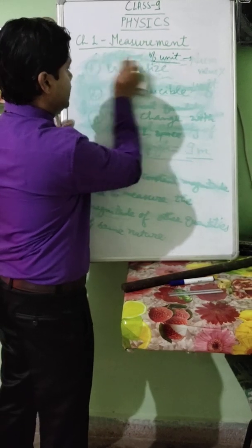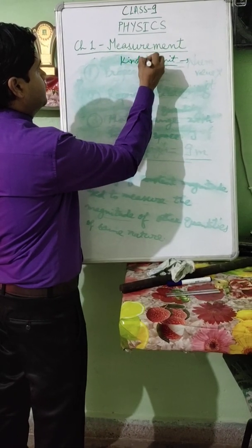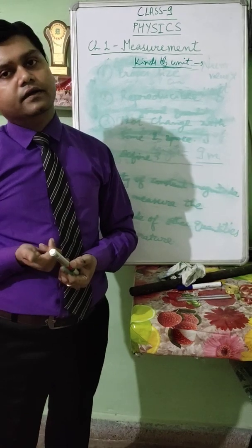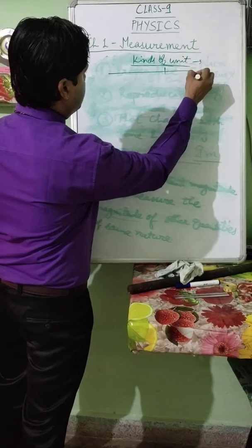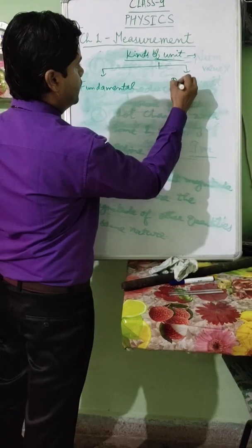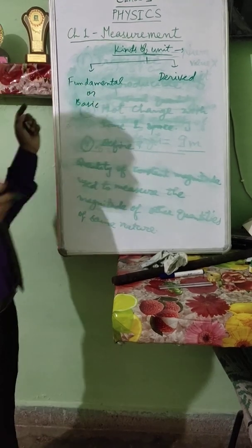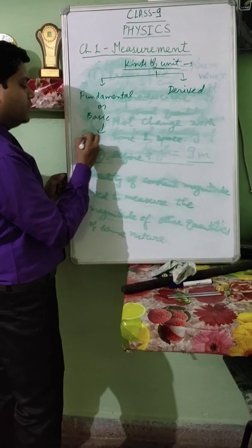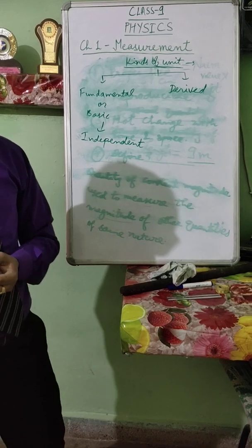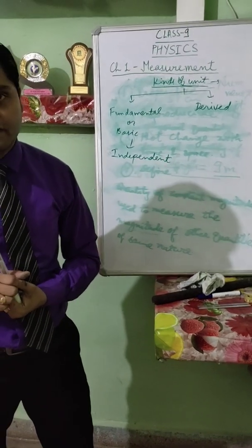Now the next topic is kinds of units. Basically, units are of two kinds: fundamental units and derived units. Fundamental units are also known as basic units because these units are independent of each other and do not need any derivation. In derived units, we cannot state them directly — we have to use a formula to find out the respective unit.